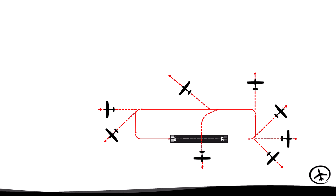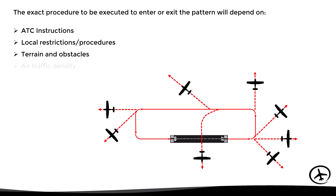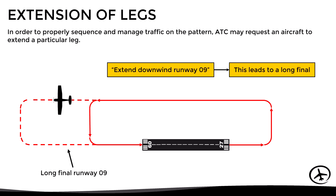As we can see, there are many different ways to join or leave the pattern. The exact procedure will depend on factors such as ATC instructions, local procedures and restrictions, terrain and obstacles, air traffic density, airport layout, and airspace structures. There are also some maneuvers that can be executed in the pattern depending on the situation: ATC may request an aircraft to extend a particular leg, or the pilot can make the decision to do so. The most common extension is the extension of the downwind leg, where the aircraft flies a longer-than-normal downwind, leading to a longer-than-normal final.